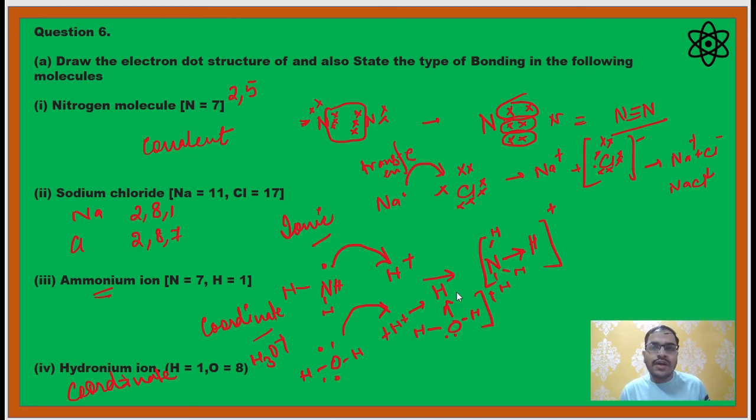So now I have completed the chemical bonding chapter. I have discussed the theory portion and also the question answer, so you can easily study accordingly. Please do practice the electron dot diagram - those questions definitely come from this portion. Thank you.